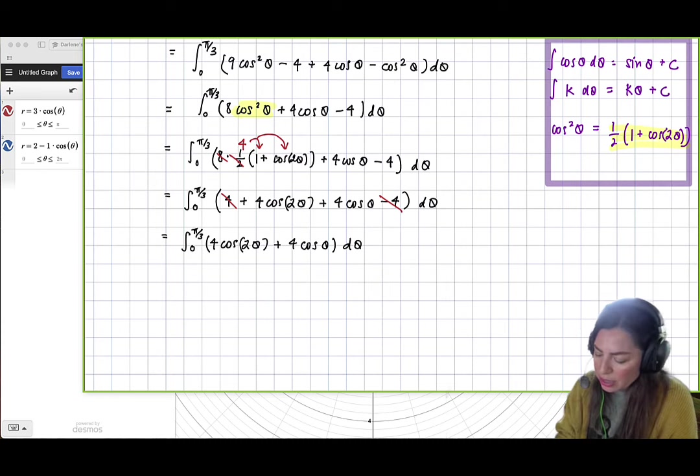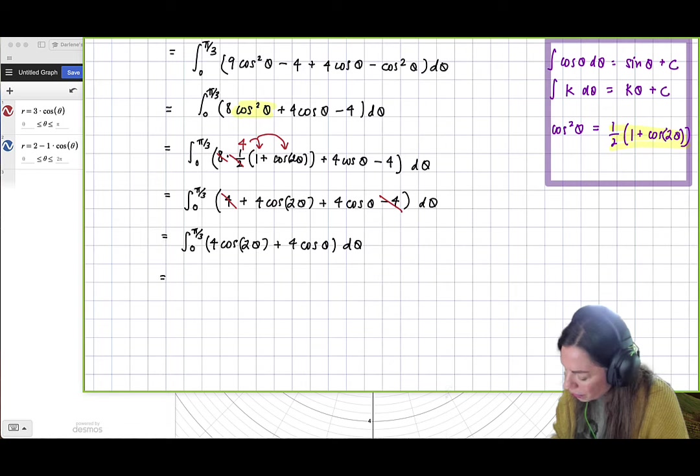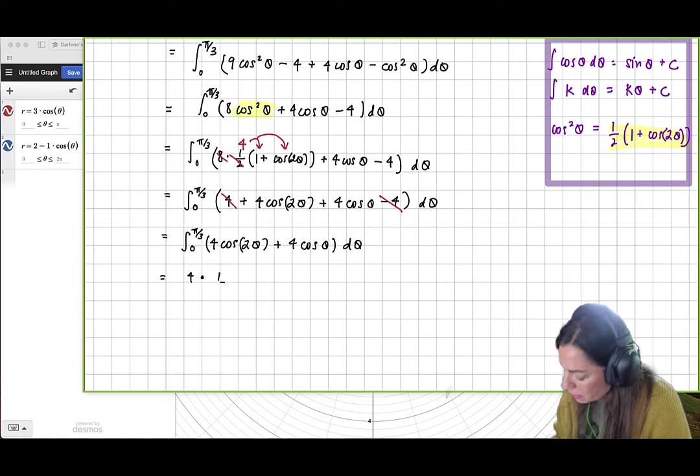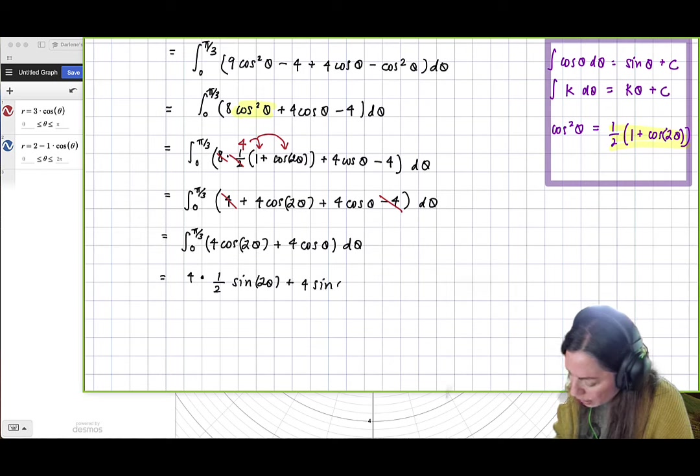And now we can go ahead and use our properties here. So now I'm going to have 4 times and the definite integral of cosine 2 theta we've done so many times. So now I'm going to have 4 times just 1 half sine 2 theta plus 4 and then sine theta evaluated from 0 to pi over 3.